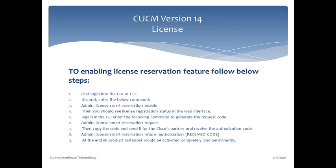The second step involves running another CLI command to generate a code, which you then send to Cisco. Cisco will send you original licenses or demo licenses that you can use in a lab environment. You copy the generated code and send it to your Cisco partner. Cisco then sends back the licenses for you to upload. By default, demo licenses may allow around 50 to 200 free licenses.